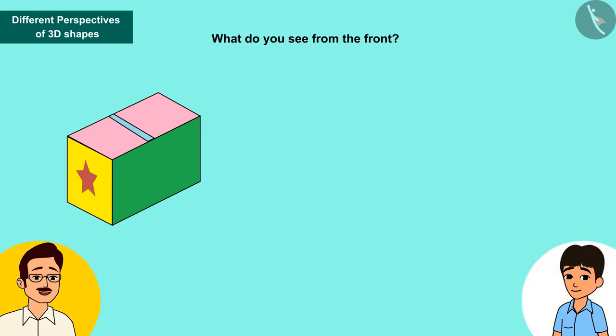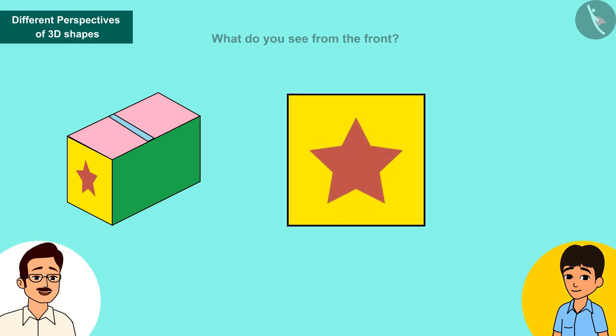And what do you see from the front? Looking from the front, I see a square.